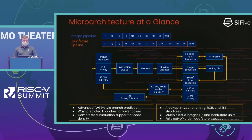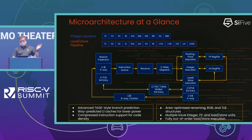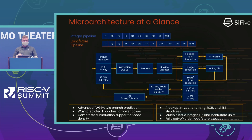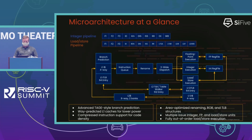From a high level, the microarchitecture at a glance: the integer pipeline goes through ten stages starting from the F1 stage, which is the first fetch stage for instructions out of the instruction cache, all the way to the writeback of simple integer instructions. The load store pipeline is a little bit more complicated because load instructions have to go through not just a single cycle of execution but address generation and looking up the tag and data arrays, so the lowest load latency to the pipeline would be 13 cycles instead of 10.